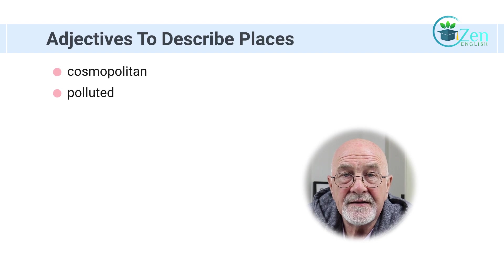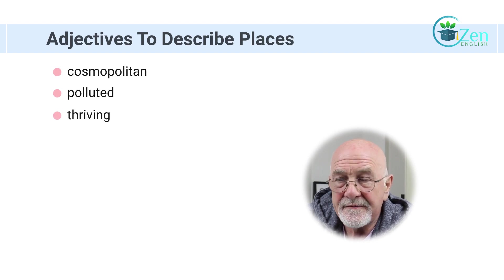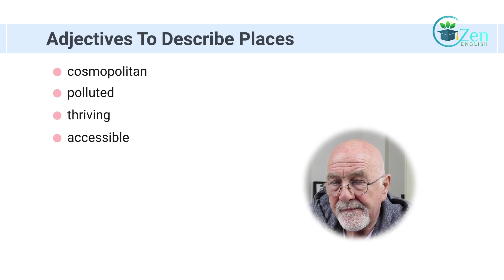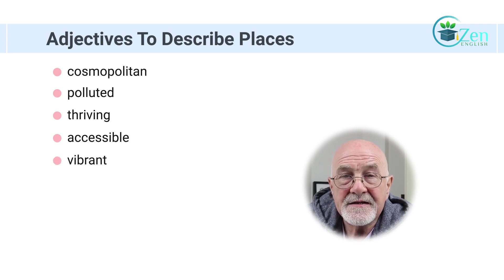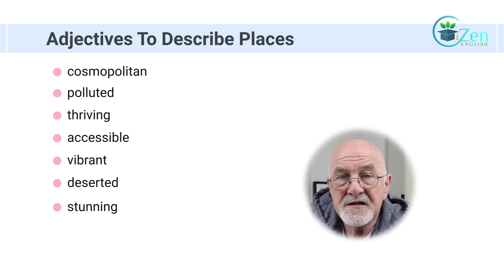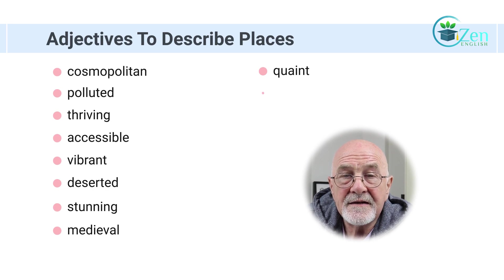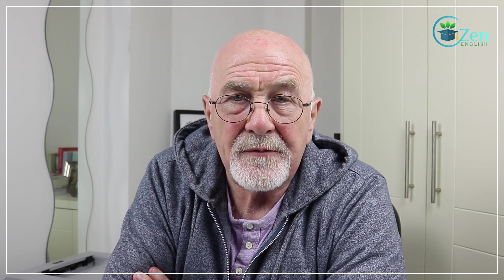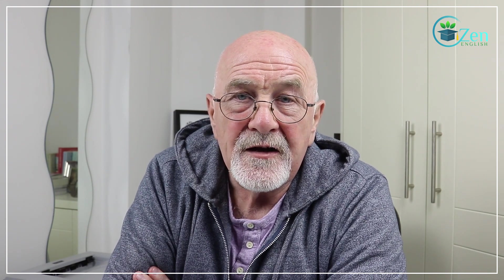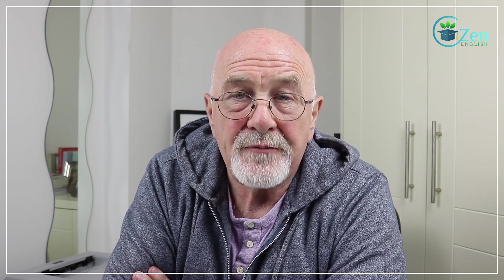Cosmopolitan. Polluted. Thriving. Accessible. Vibrant. Deserted. Stunning. Medieval. Quaint. And bustling. So 10 adjectives. I'm going to go through them one by one, give you a few examples. Hopefully you'll get an opportunity to use them and practice them.